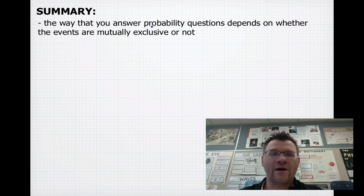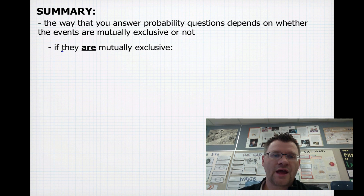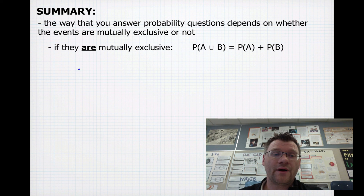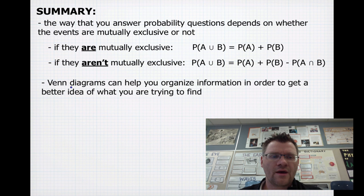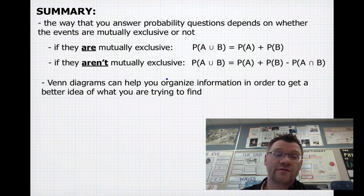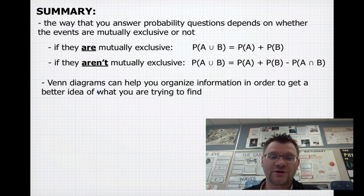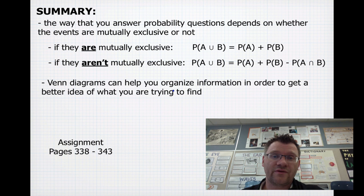In summary, how you answer probability questions depends on whether events are mutually exclusive or not. If they are mutually exclusive — no elements in common — you can just add their probabilities. If there are overlapping elements, so they're not mutually exclusive, you add their probabilities but subtract the probability of both occurring. Venn diagrams can help you organize information to get a better idea of what you're trying to find — I always recommend drawing one if you can. Your assignment is on pages 338 to 343. Good luck, and we'll see you in class.